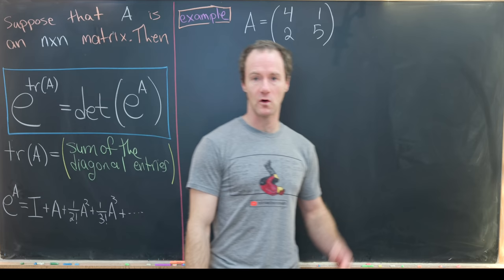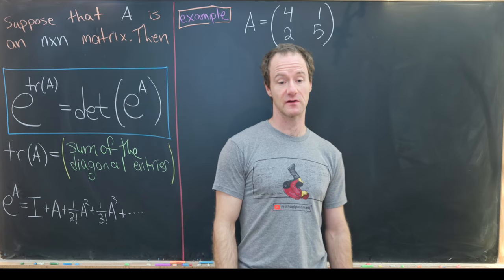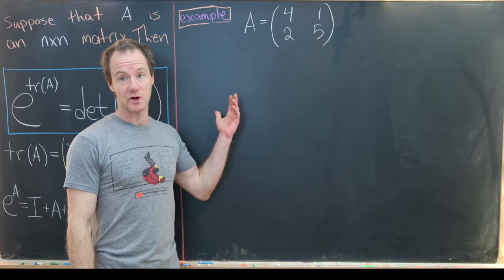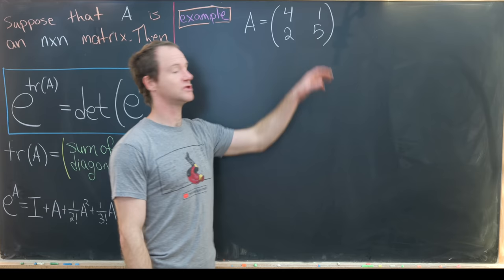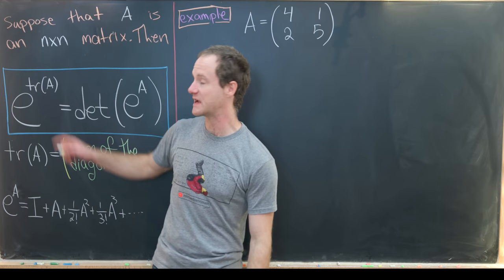So let's do a full worked example of this in action, and then we'll prove this formula in general for a special class of matrices, but that class will be fairly broad. I've built a matrix that works out nicely: it's a 2 by 2 matrix with entries 4, 1, 2, 5. We want to do two things: find the exponential of our matrix and then find its determinant, or find the trace and exponentiate that.